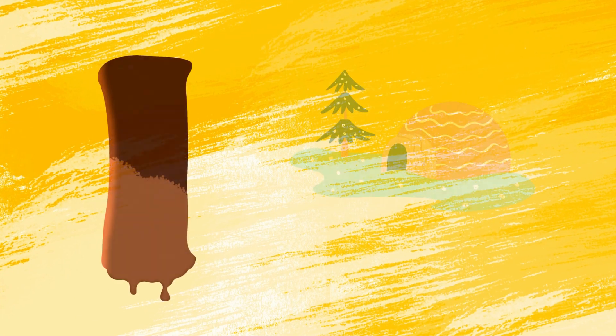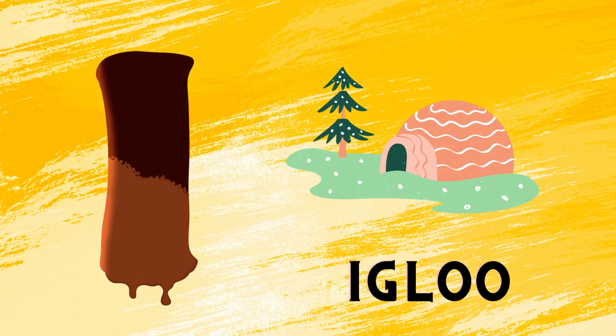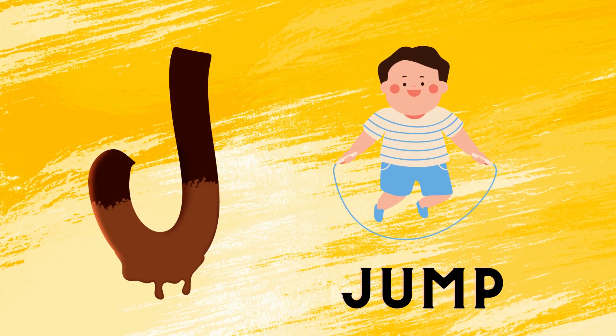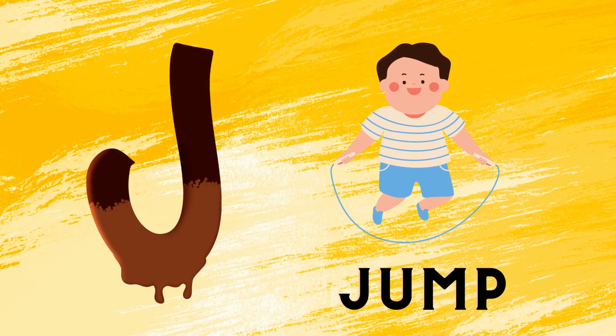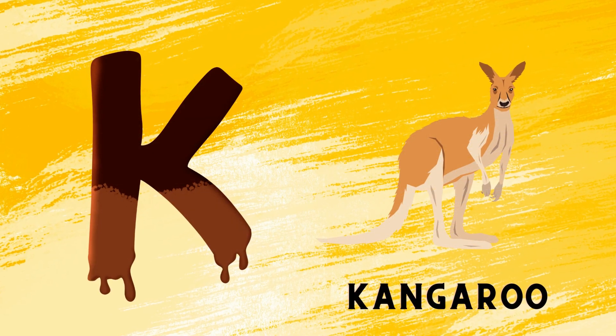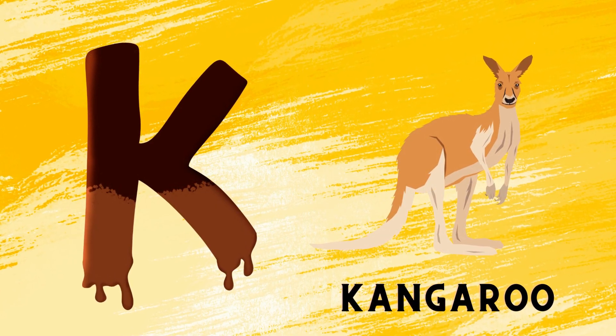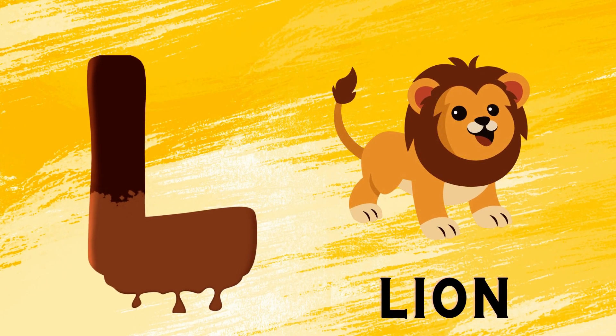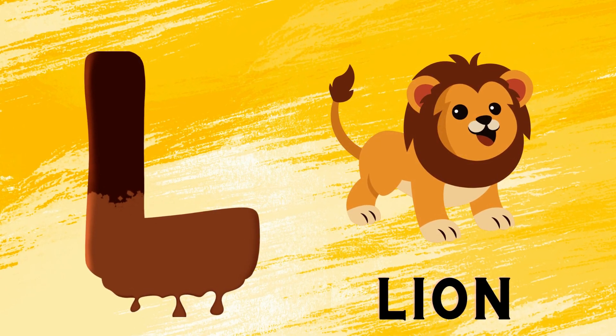I is for igloo, i-i-igloo. J is for jump, j-j-jump. K is for kangaroo, k-k-kangaroo. L is for lion, l-l-lion.